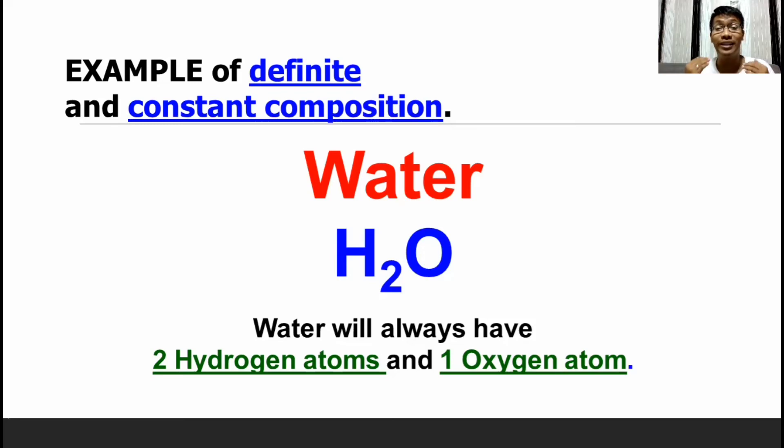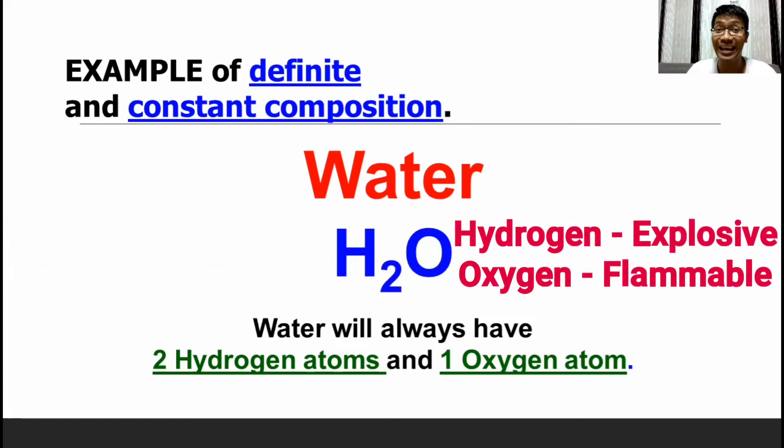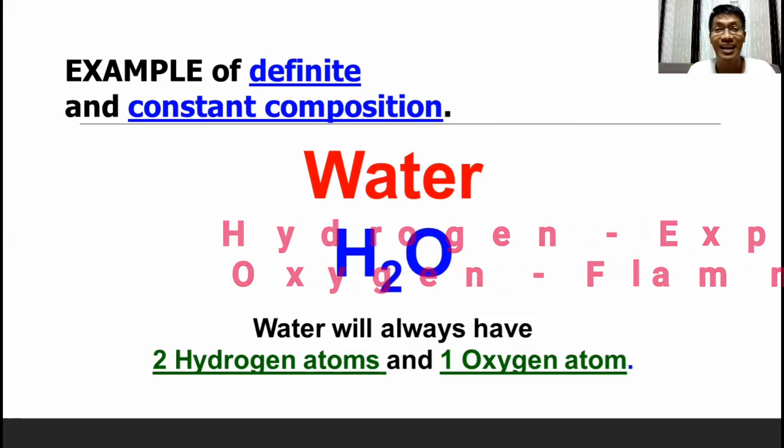We have to remember as well that the properties of each compound is different from the properties of each element it is made up of. Do you know that hydrogen is an explosive gas while oxygen is a flammable gas? But when they are combined together in H2O, definitely the properties of H2O is far different from the hydrogen gas and oxygen gas. Because it is now a drinkable substance.